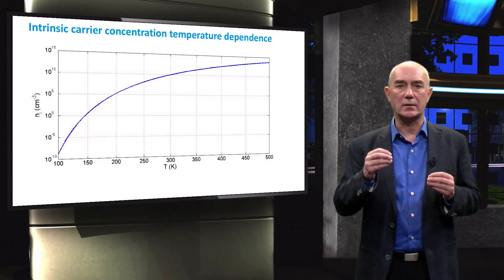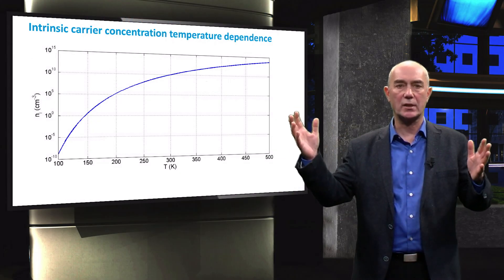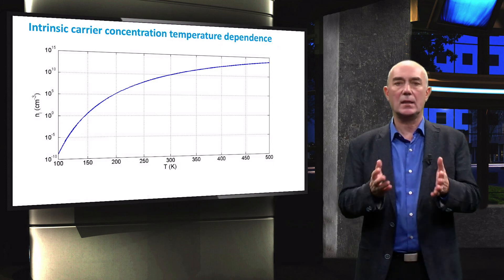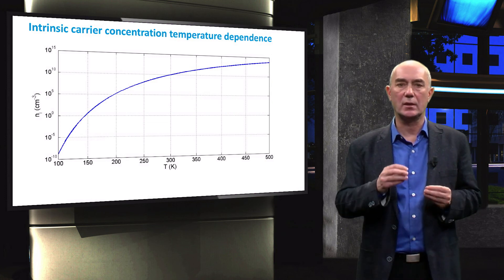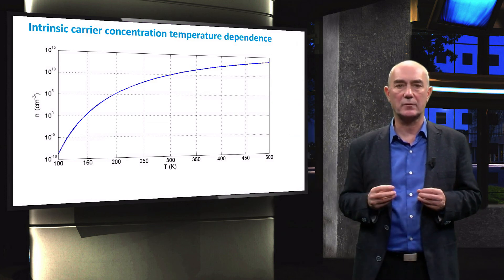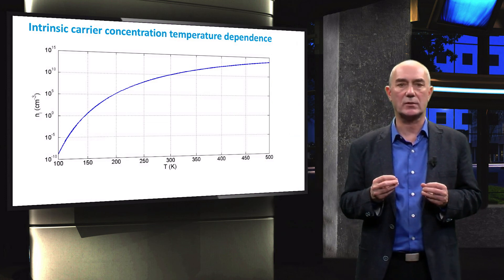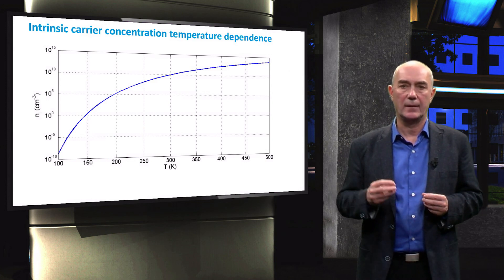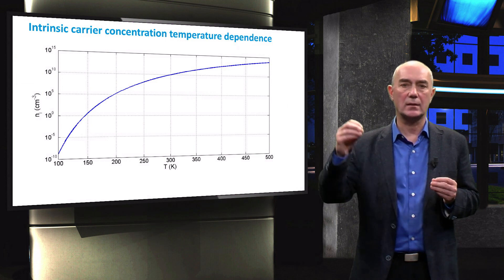This graph shows the temperature dependence of charge carrier concentrations in intrinsic silicon. It can be expected that with increasing temperature, more electrons are excited from the valence into the conduction band, since more thermal energy is available. This explains the increasing Ni.